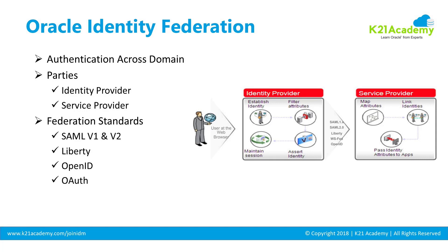Federation has standards. SAML — Security Assertion Markup Language — has two versions; version 2 is the latest. Other supported protocols include Liberty, OpenID, and OAuth. Prior to single sign-on occurring, you configure trust between the identity provider and service provider. There is metadata containing details about each party, and they exchange that metadata with each other so they can trust one another.